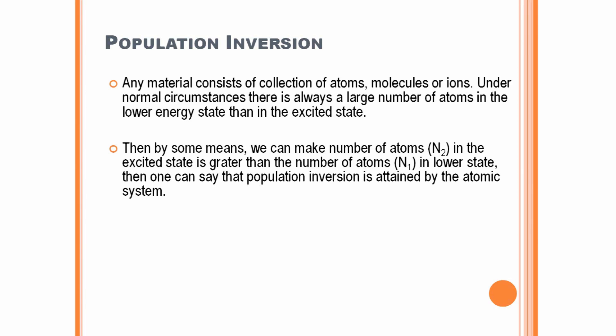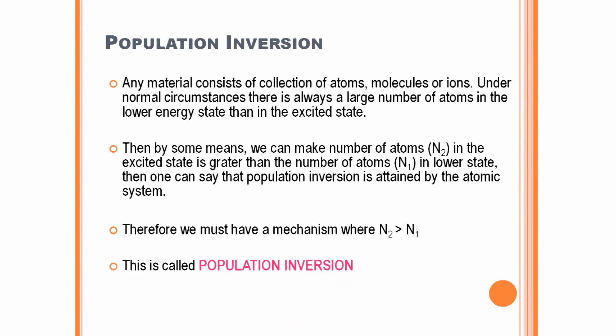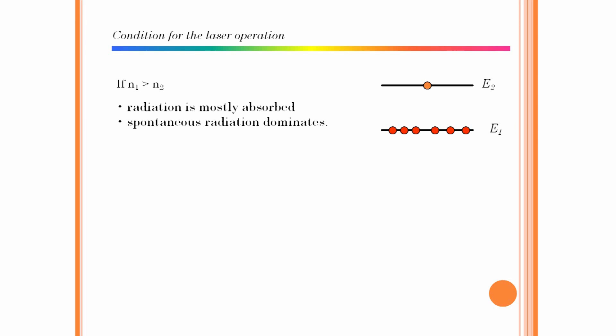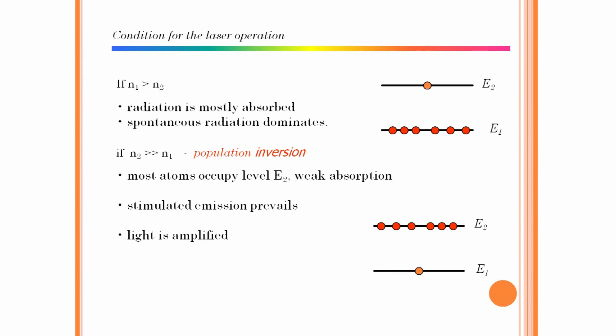For the production of laser, this is one of the most important requirements. If you denote the number of atoms in the higher energy state as n2 and the number of atoms in the lower energy state as n1, the condition for population inversion is n2 is greater than n1. This is called population inversion. The diagram shows the number of atoms in the higher energy state n2 is greater than n1, and this is how population inversion can be represented.